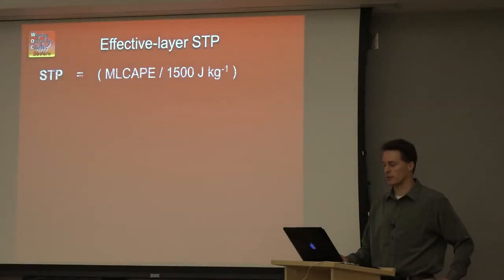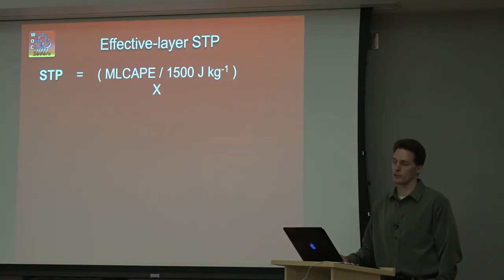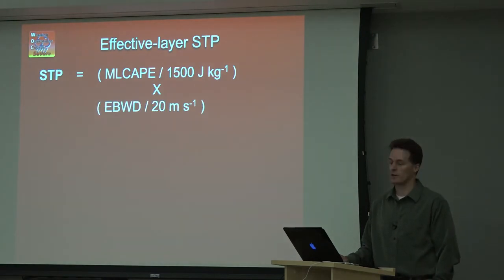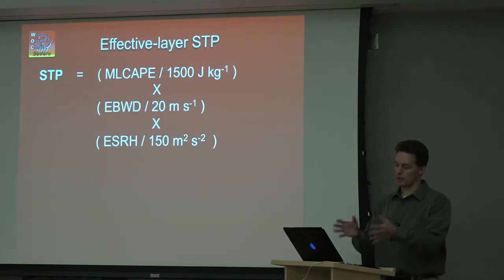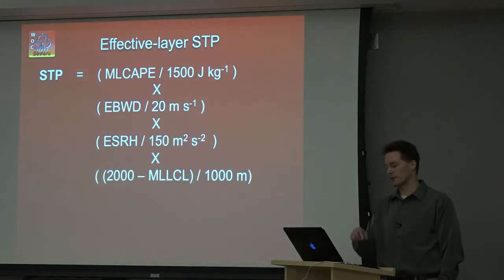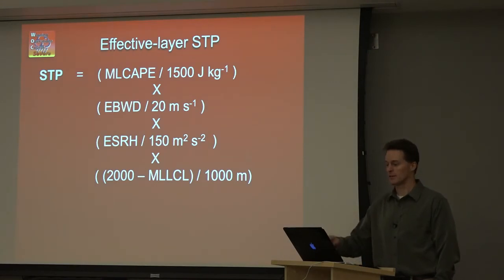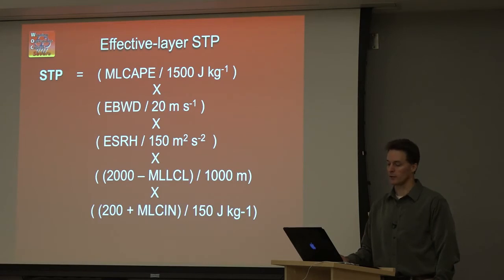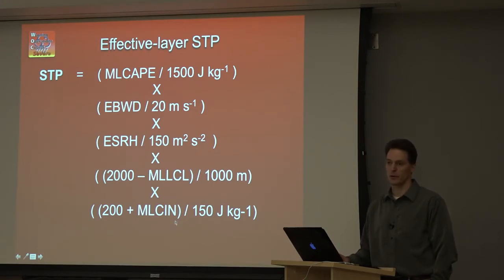The effective layer significant tornado parameter is built much like the SCP. We normalize to a slightly larger CAPE value because SIGTOR-producing supercells tend to have larger buoyancy on average. Effective bulk wind difference uses the same value as the SCP — we're just looking for supercells. Effective SRH is tripled compared to the SCP value because low-level shear matters; we want the pressure perturbation and stretching concentrated closer to the ground. The LCL height term is formulated so that a 2,000-meter LCL zeroes out the entire term. Convective inhibition above about 200 J/kg also zeroes out the parameter, so if any of these conditions are violated, the whole STP collapses to zero.